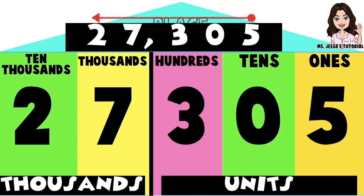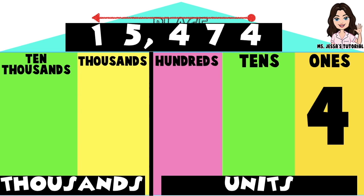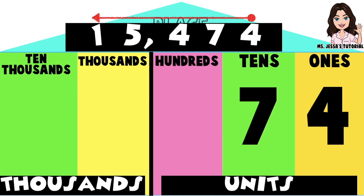Let's have another example: 15,474. Again, children, in identifying the place value, you are going to start from the rightmost digit going to the leftmost digit. Digit 4 is the first digit from the right, so digit 4 is in the ones place. Next is digit 7. Since digit 7 is the second digit from the right, digit 7 is in the tens place. Next is digit 4. Digit 4 is the third digit from the right, so digit 4 is in the hundreds place.